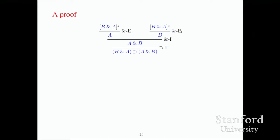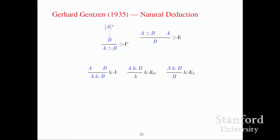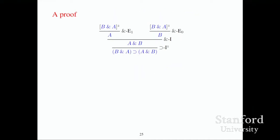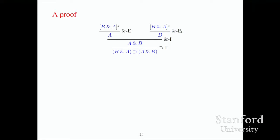Someone might say "B and A implies A and B — that's completely obvious!" Well, yes, it is completely obvious, but it's not one of the proof rules I gave you. So if the proof rules work, we should be able to prove it. To prove an implication, assume B and A. Having assumed B and A, I can conclude A, and also conclude B. Now I've got proofs of A and B, so I've proved A and B. Now I can discharge my assumption, and I know that B and A implies A and B. The proofs fit in little trees like this.